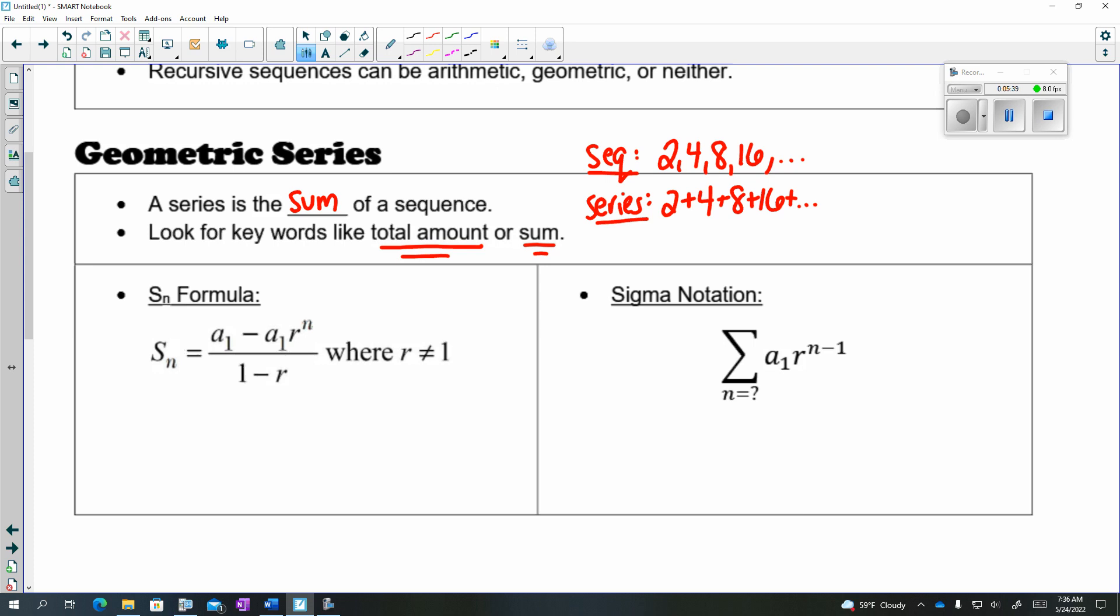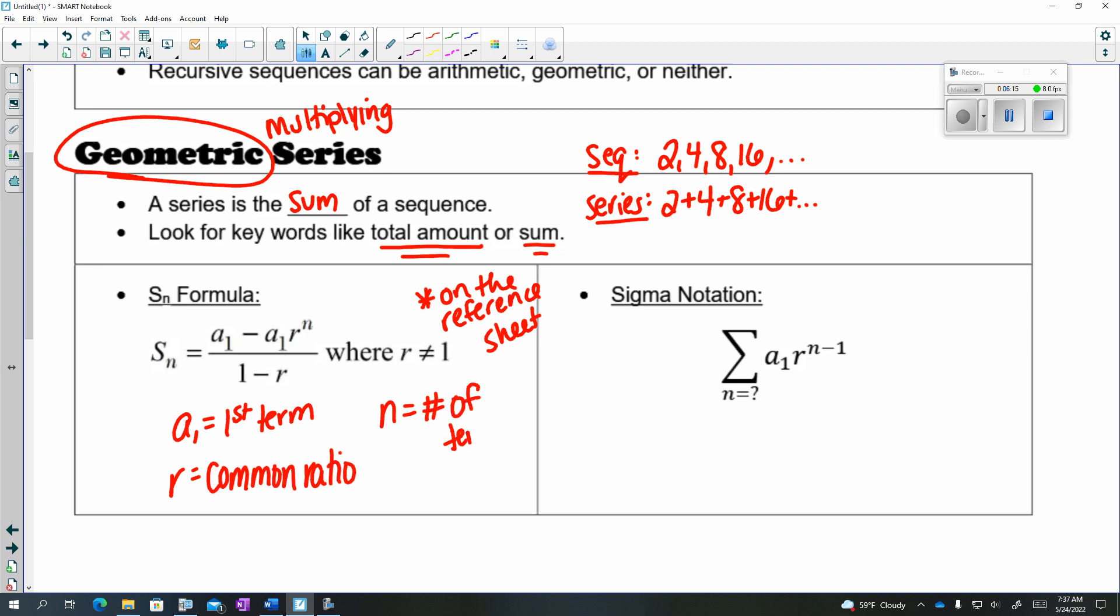The formula that we use most often is the S sub n formula, which once again is on the reference sheet, so you don't need to memorize it. You just need to know what everything stands for. So A sub 1 doesn't change, it's still my first term. So R, because we're talking about a geometric, that means it's multiplying. So R is my common ratio, or what you're multiplying by every single time. And N is your number of terms.